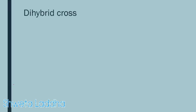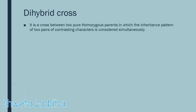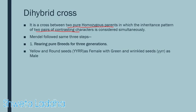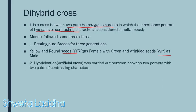What is a dihybrid cross? In a dihybrid cross, Mendel carried out a cross between two pure homozygous parents in which he studied the inheritance patterns of two pairs of contrasting characters simultaneously. He again followed his three original steps. First, rearing of pure breeds for three generations. He took yellow and round seeds plant as a female plant and a green and wrinkled seeds plant as a male plant, and carried out artificial hybridization between them by emasculation.